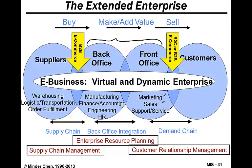The back office includes the rest, which may include accounting, manufacturing, operations, engineering, and human resources. The interaction with suppliers involves the so-called warehousing operation, logistics, transportation, and order fulfillment, etc.